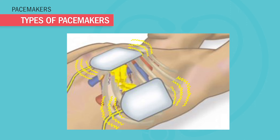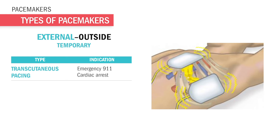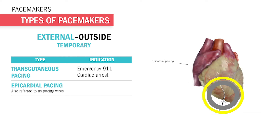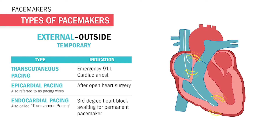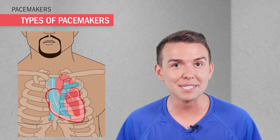Temporary pacemakers are outside the body and we have three types. Number one is transcutaneous pacing — pads placed over the chest like stickers and the impulse goes through the skin, usually seen in the ambulance, ER during CPR/code situations, and ICU for third-degree heart blocks. Number two is temporary epicardial pacing — wires hooked up directly to the outside of the heart, keeping it pumping after open heart surgery. Number three is endocardial pacing — leads inside the heart in the endocardium, used for severe third-degree heart block.